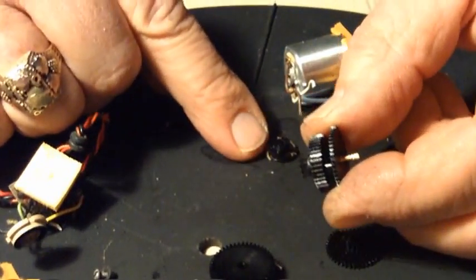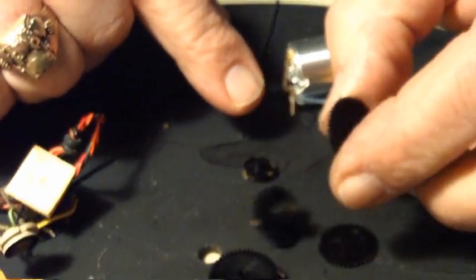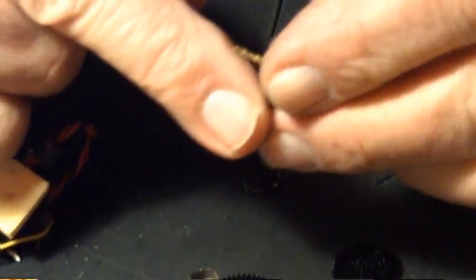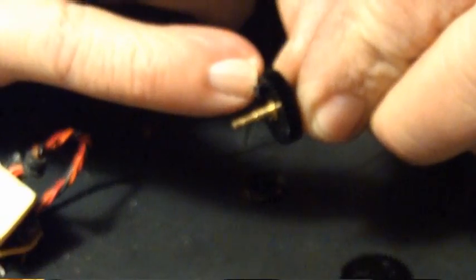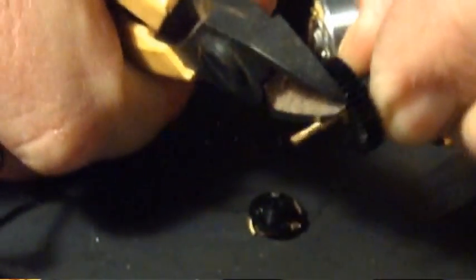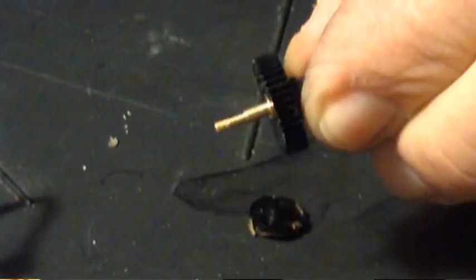Once you've got the wiper off and the gear train out, you need to take this little stop off the bottom of the gear. Some servos have them and some don't. I'm just going to cut that right off so that gear doesn't stop, so it will freewheel all the way around. That's all you've got to do to get that off.